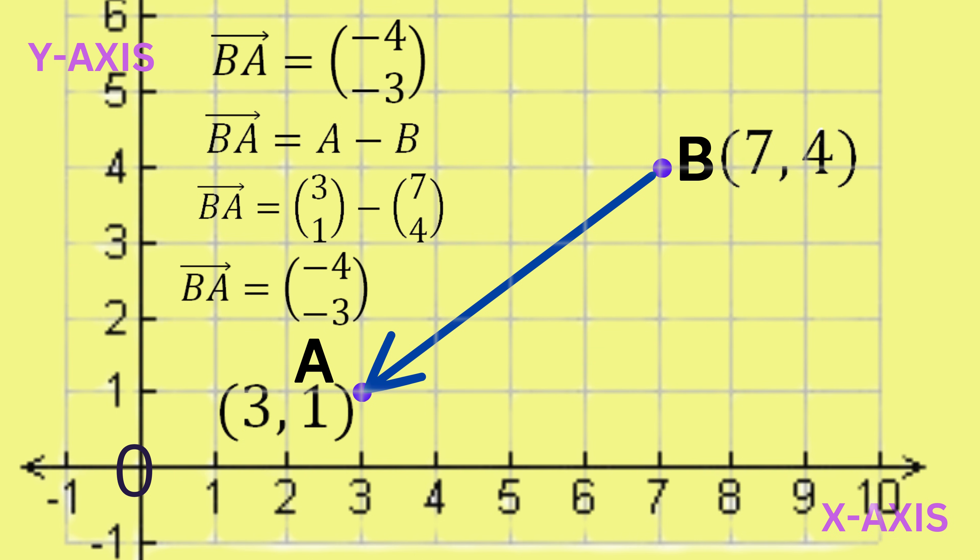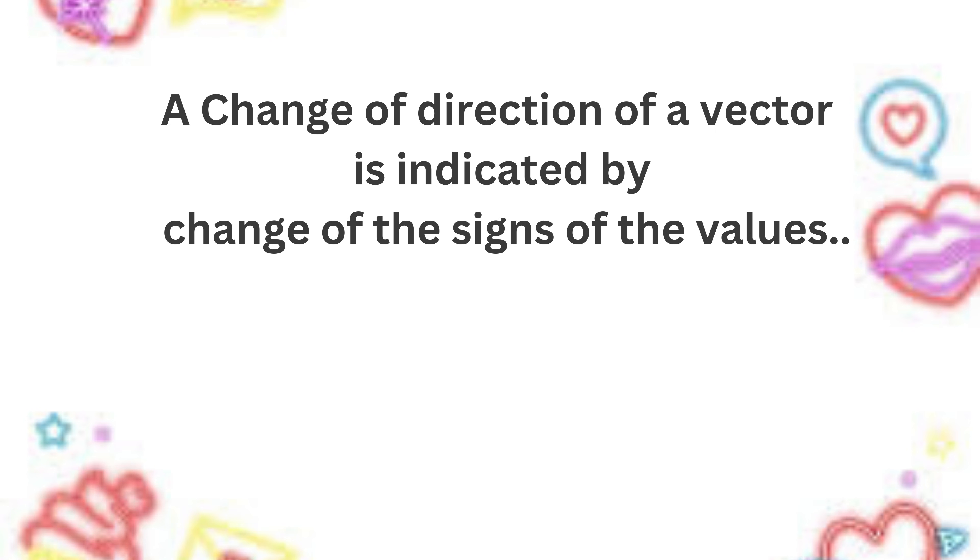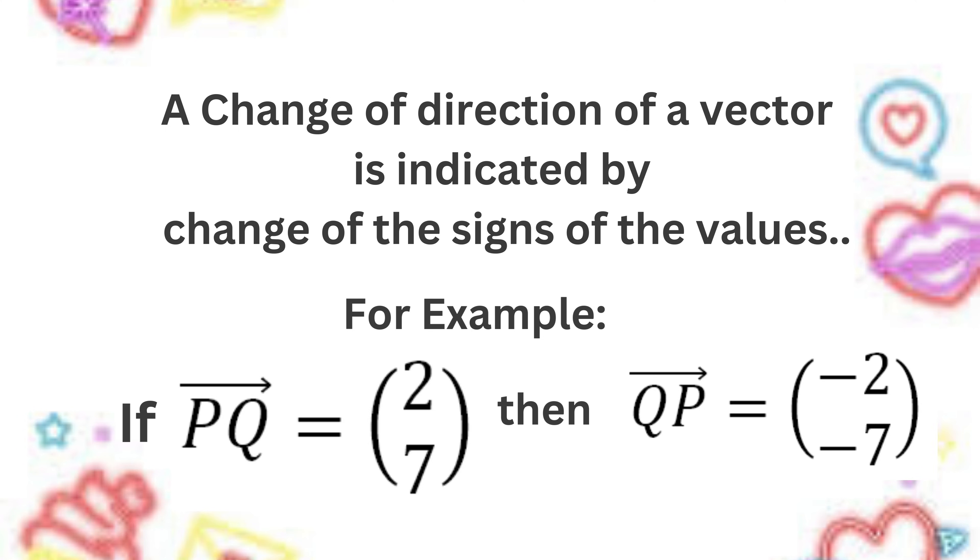When you compare the two vectors AB and BA, you will notice something that's fundamental to vectors. The signs are different. This is key. Change of direction of a vector is indicated by a change of sign of the numbers. For example, if we have an arbitrary vector PQ equal to (2, 7), what is the vector QP? You are correct: (-2, -7).